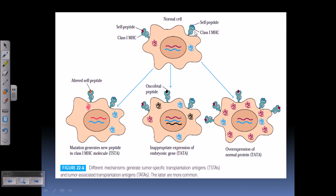Looking at this picture, a normal cell has a nucleus with protein gene sequences that are translated into proteins. Usually two different types of protein are produced — one blue and one red — and both are presented as self-peptides using class 1 MHC molecules onto the surface of the normal cell. From this, the cell can generate tumor specific antigens of two types: TSTA and TATA.